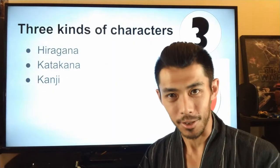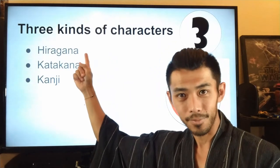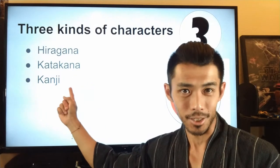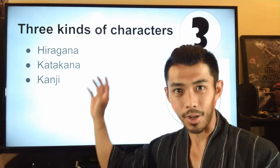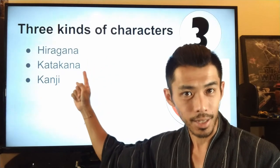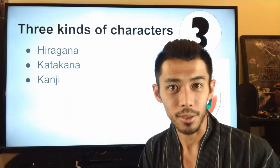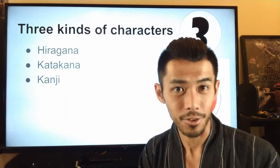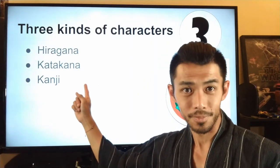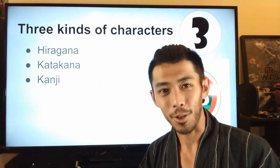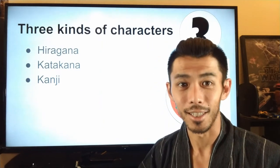In Japanese writing systems there are three types: hiragana, katakana, and kanji. The original Japanese characters are actually hiragana and katakana, and kanji is basically Chinese characters that the Japanese borrowed about a thousand years ago. Hiragana and katakana actually came from kanji. In this video we're going to be only focusing on hiragana, and then I'll create more videos to talk about katakana and kanji later on.